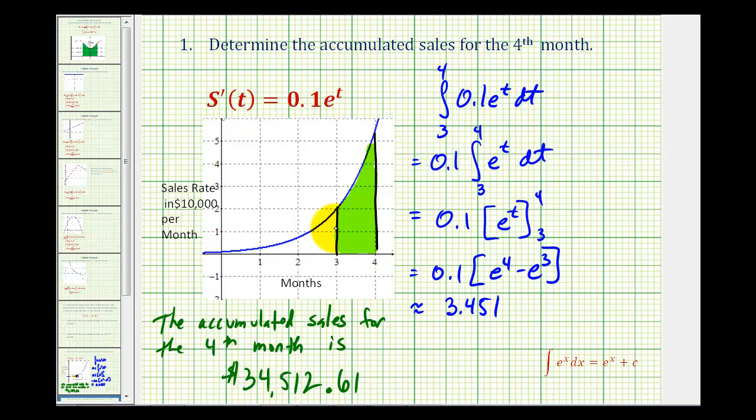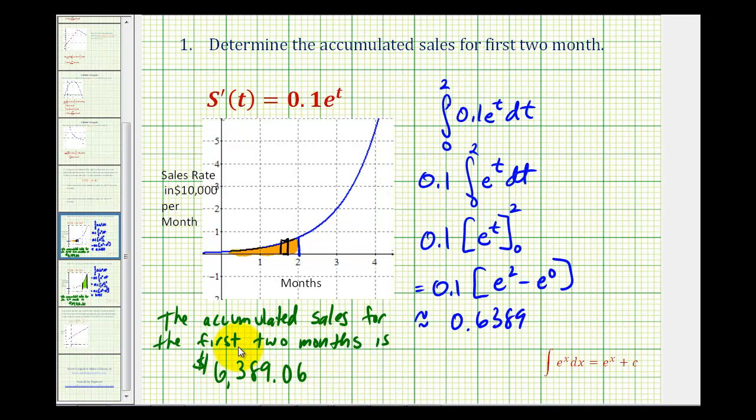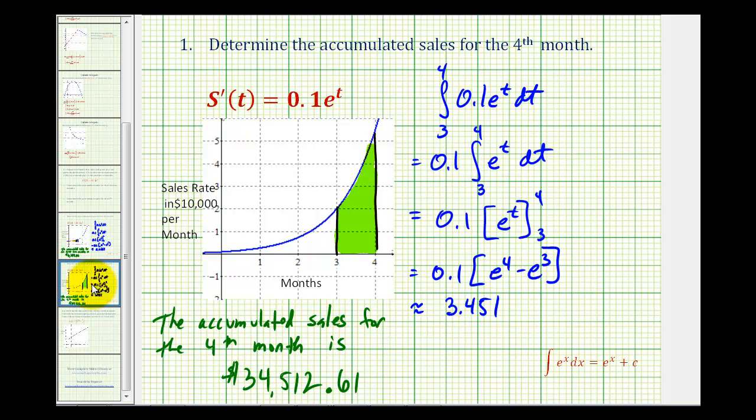So as we mentioned before, because the sales rate is growing so quickly, the accumulated sales are much larger as time passes. Notice for just this one month, the sales are over thirty-four thousand dollars. But for the first two months, the sales were just over six thousand dollars. We'll take a look at one more application of area under a function in the next video. I hope this was helpful.